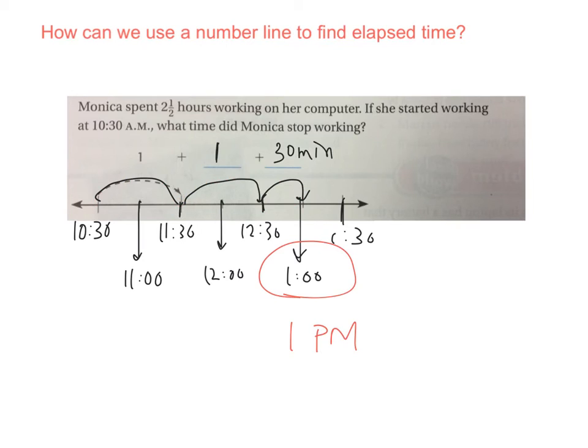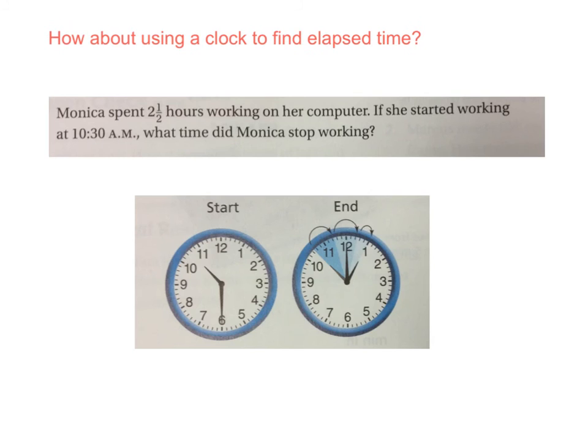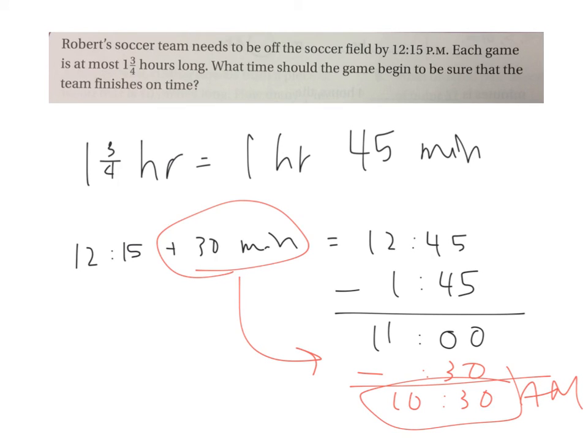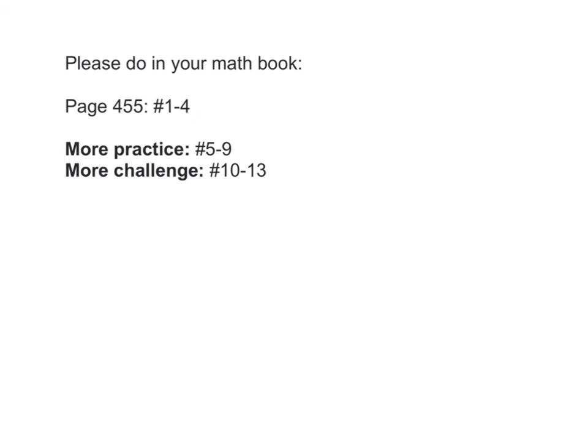So I want you to explain to your neighbor right now, how does this number line represent the situation described in the problem?